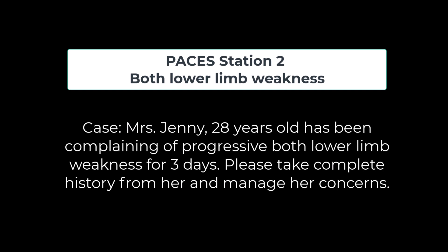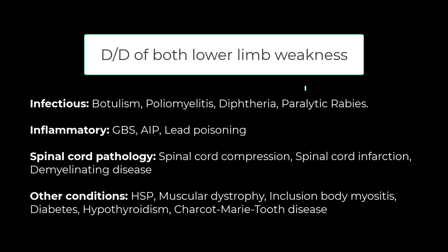Today's case is Mrs. Jenny, 28 years old, who has been complaining of progressive both lower limb weakness for three days. Please take a complete history from her and manage her concerns. You would get this case outside of your examination room and have a total of five minutes to think about it and write something on a piece of paper. You should use this time wisely to formulate a list of differential diagnoses for both lower limb weakness.